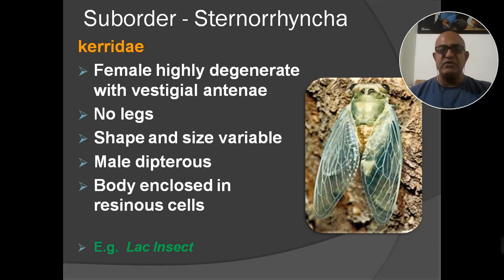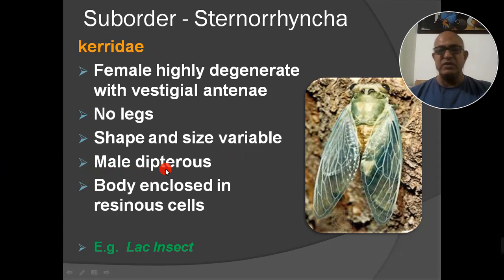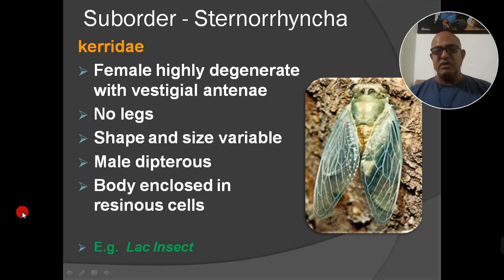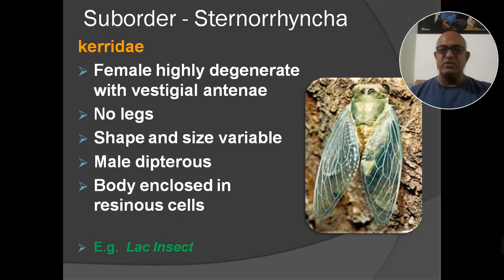Next family: Kerriidae. Body is very small in size. No legs. Shape and size variable. Male is dipterous — having two wings. Body and claws enclosed in resinous cells. The example is the lac insect — Laccifer lacca — used in lac production. India has a lac industry worth crores of rupees. In Rajasthan also, areas like Banswara, Dungarpur, and tribal areas have lac production in farms, contributing significantly to cottage industries.